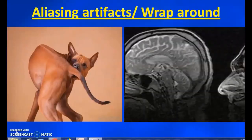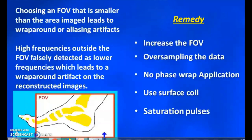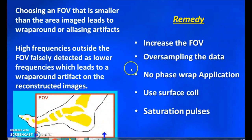The final artifact is the aliasing or wraparound artifact, which commonly happens when choosing a small FOV. The region from outside the FOV gets wrapped around to the back side of the area. This can be removed by increasing the FOV, using surface coils, or applying saturation pulses to remove this kind of artifact.